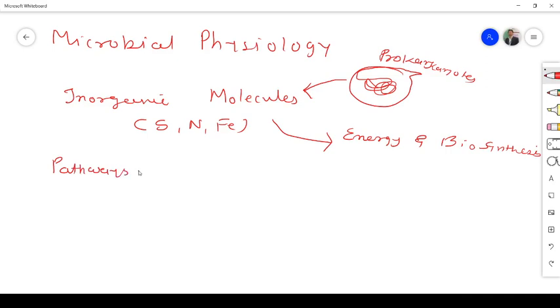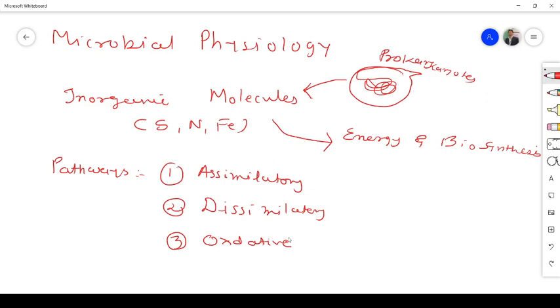And we mainly focus on this pathway. So there are mainly three pathways on which we have to focus. The first one is known as assimilatory pathway. Second one is dissimilatory pathway. And the third one is known as oxidative pathways. So here our focus is on these three pathways.